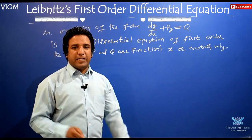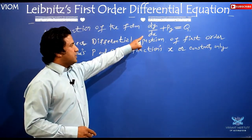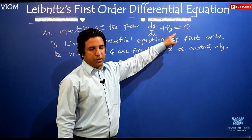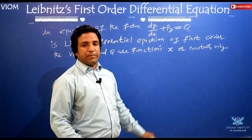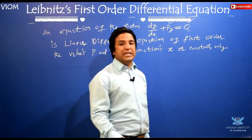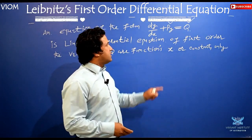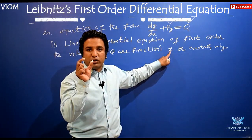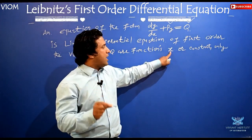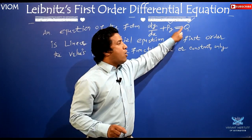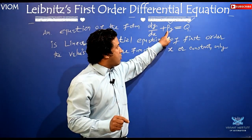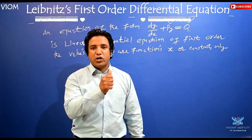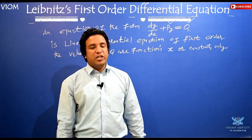Any equation of the form dy/dx plus Py equals capital Q contains two concepts: P and Q as per Leibniz. These P and Q are functions of small x — those contain the variable x or constants. P may be constant or Q may be constant in any kind of this equation, which is a linear differential equation by Leibniz.